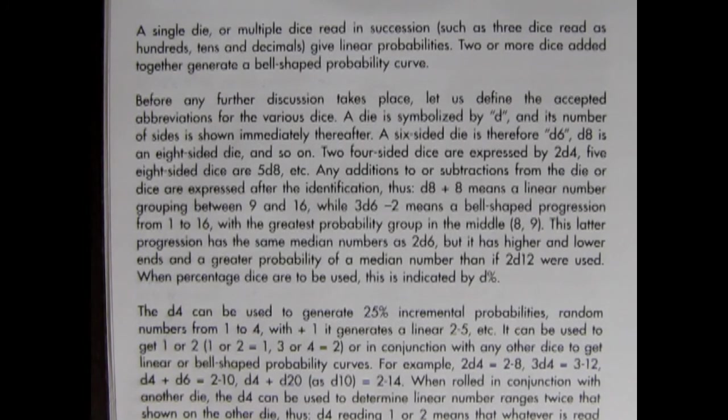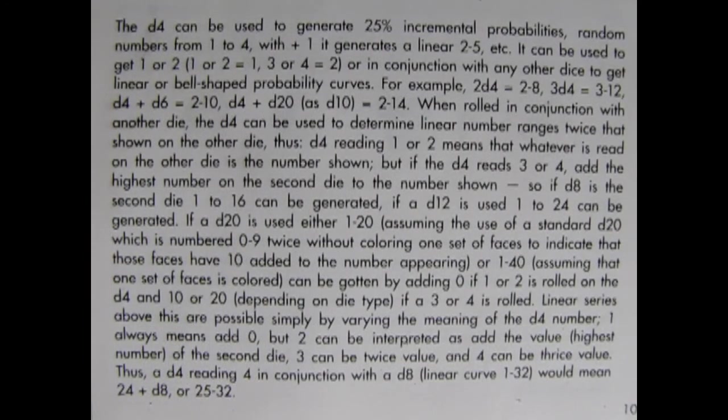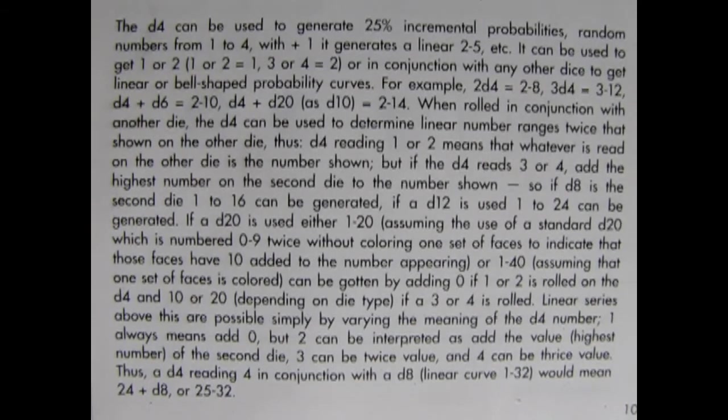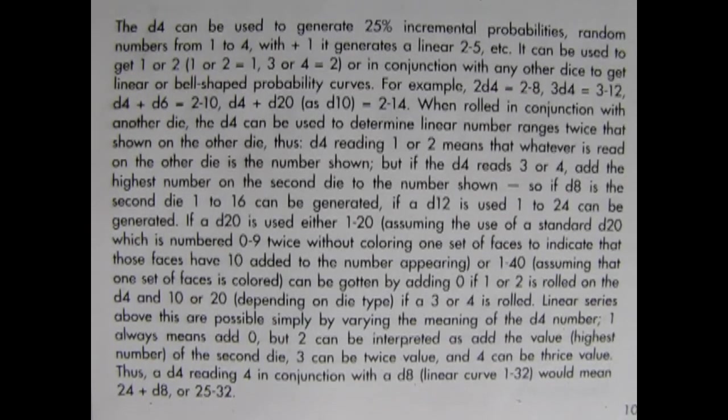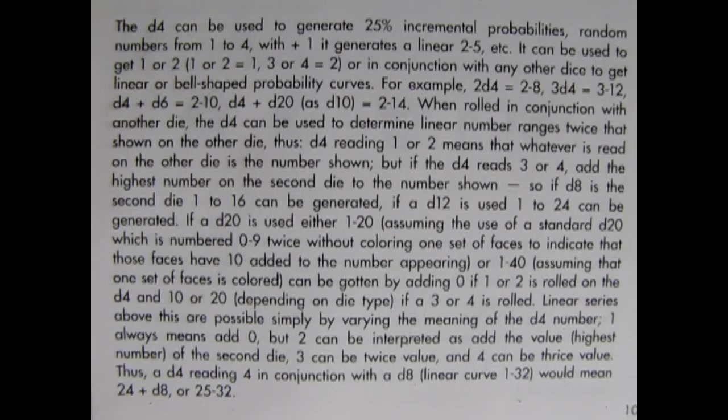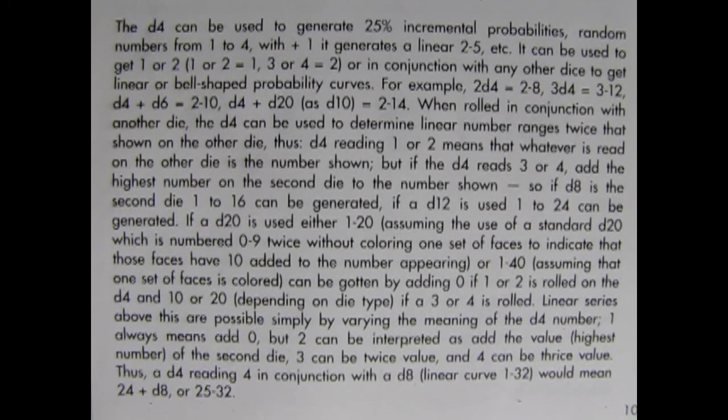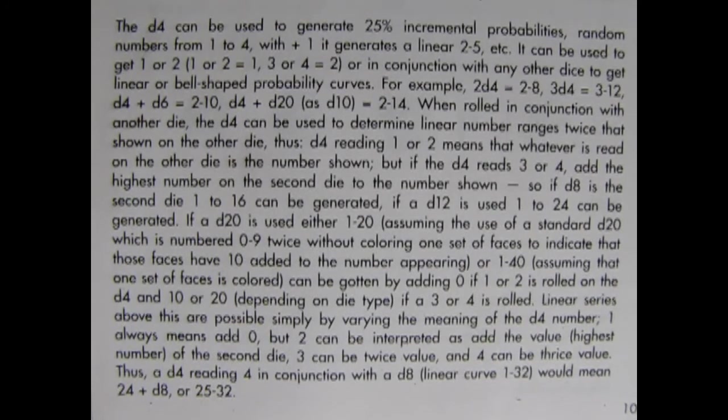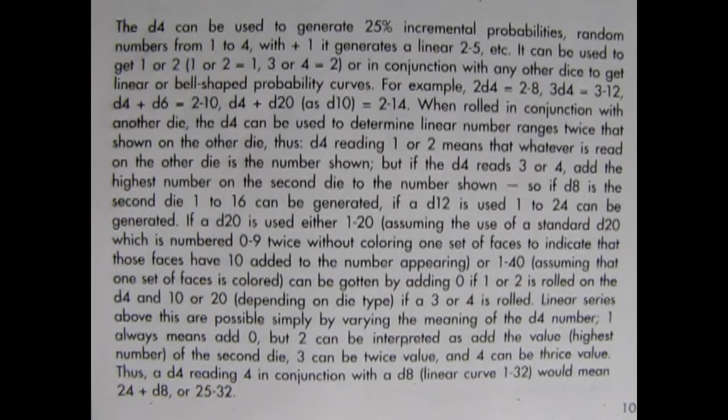When percentage dice are to be used, this is indicated by D%. The D4 can be used to generate 25% incremental probabilities. Random numbers from 1 to 4, with plus 1, it generates a linear 2 to 5, etc. It can be used to get 1 or 2. 1 or 2 equals 1, 3 or 4 equals 2. For example, 2D4 equals a range of 2 to 8, 3D4 equals a range of 3 to 12.